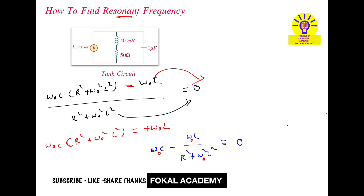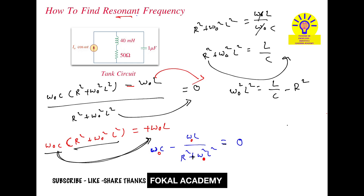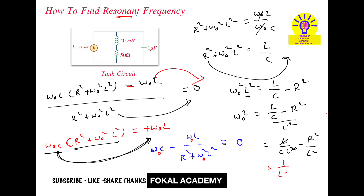Dividing both sides by ω₀C and rearranging: R² + ω₀²L² = L/C. Subtracting R² from both sides: ω₀²L² = L/C − R². Dividing by L²: ω₀² = 1/(LC) − R²/L². Therefore, ω₀² = 1/(LC) − (R/L)².